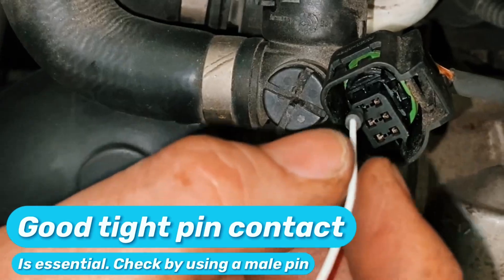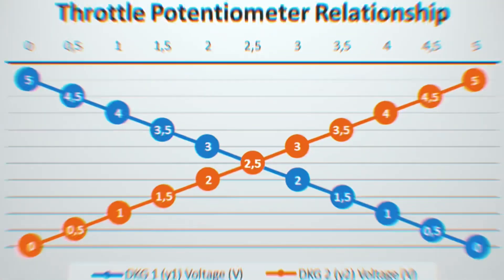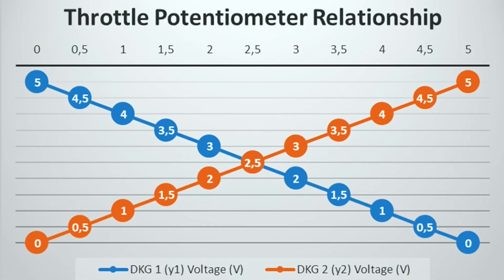Finally, very short video but to the point. Here is another Excel graph showing the X pattern you'll find on a throttle potentiometer, whether it's an accelerator pedal or a throttle body. They should meet in the middle at 2.5 volts. DKG1 starts at the top at 5 volts and ends at 0, while on the other axis it starts at 0 and ends at 5 — they go the opposite way to each other. This ensures accuracy and some degree of redundancy.